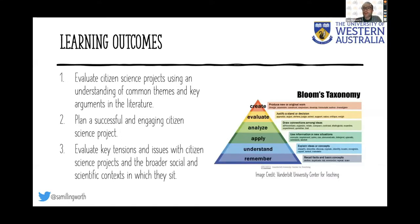So we were designing the program, obviously we started with the learning outcomes. For those of you who are used to pedagogy in higher education, on the right we have a list of Bloom's Taxonomy, which basically states that the further up the triangle we go, the more we're expecting students to engage in deep learning. At the very bottom level we expect students to remember things, and at the top we expect them to create something. In terms of the learning outcomes, we wanted them to evaluate citizen science projects — are they citizen science projects, are they crowdsourcing? We want them to plan and engage in citizen science projects themselves, and also to evaluate key tensions and issues with citizen science projects in the broader social and scientific context.